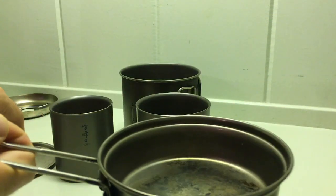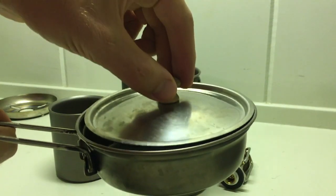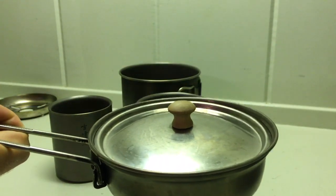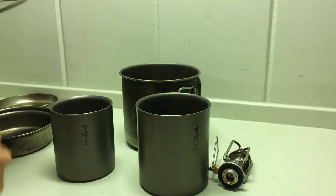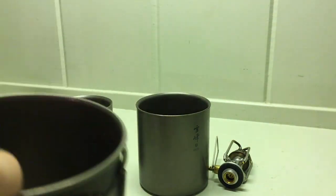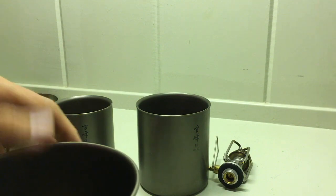The lid on the Trek 900 turns into a nice little frying pan. The lid fits on the same way on the main part too.